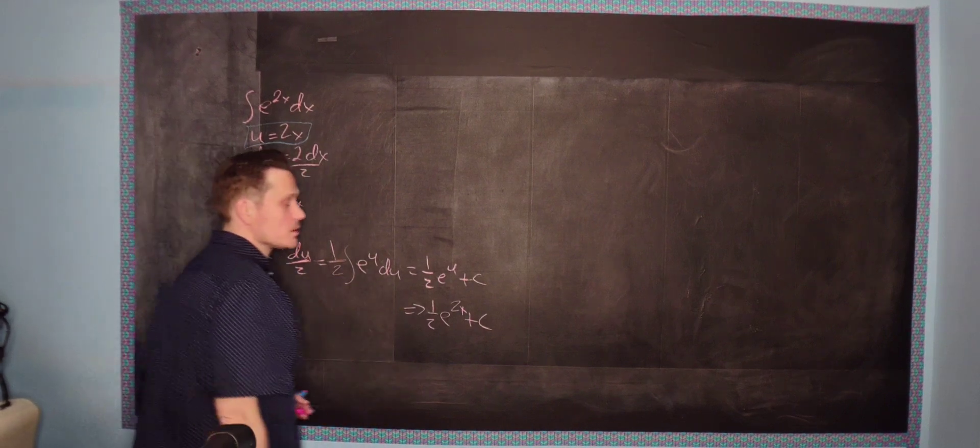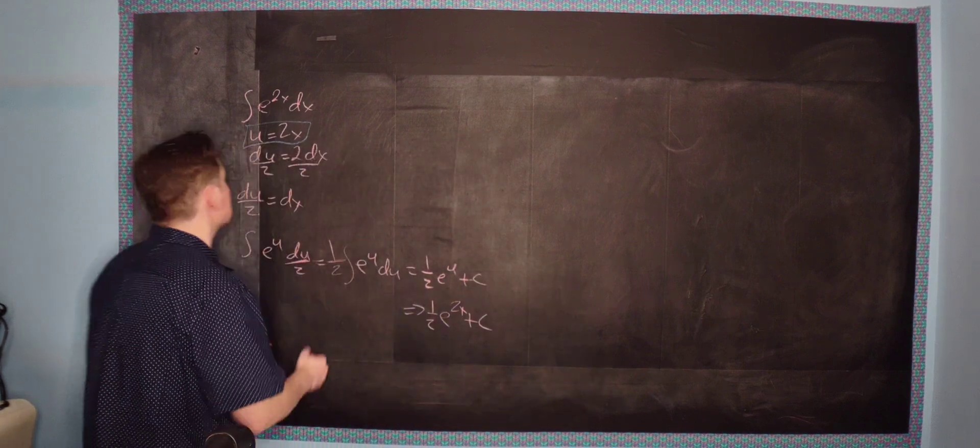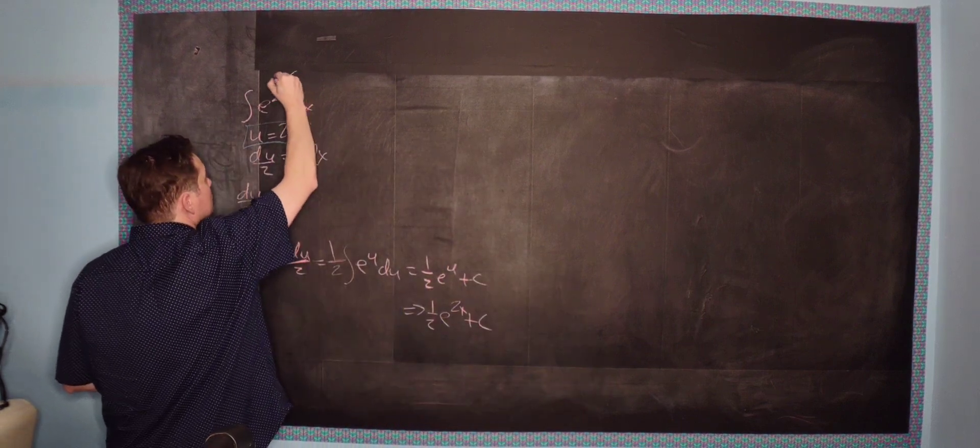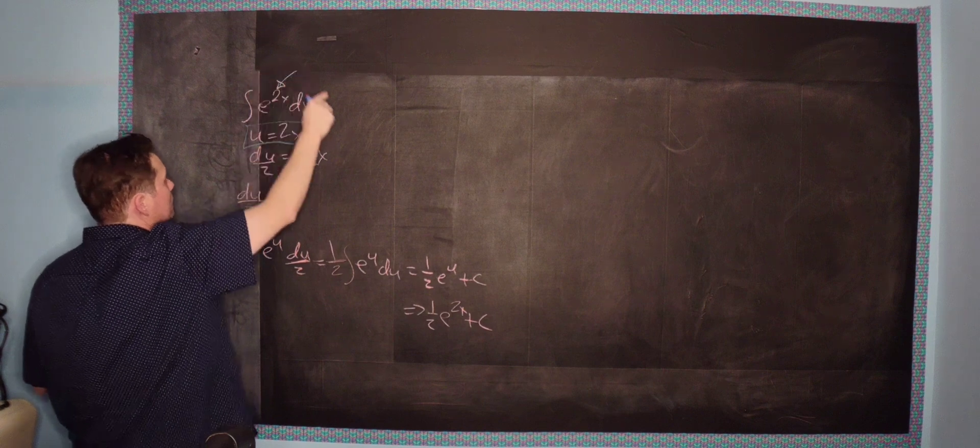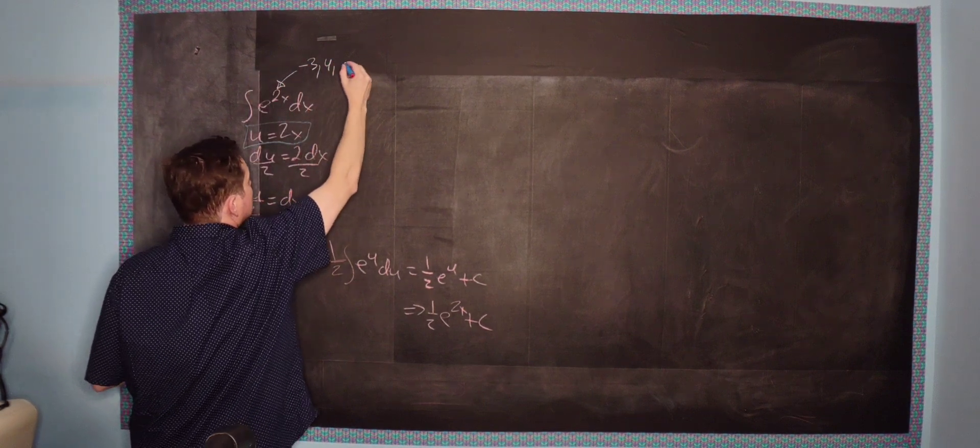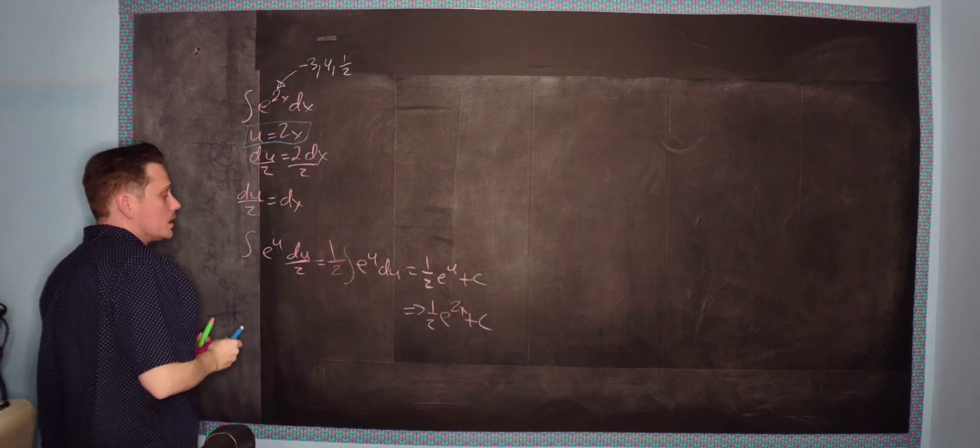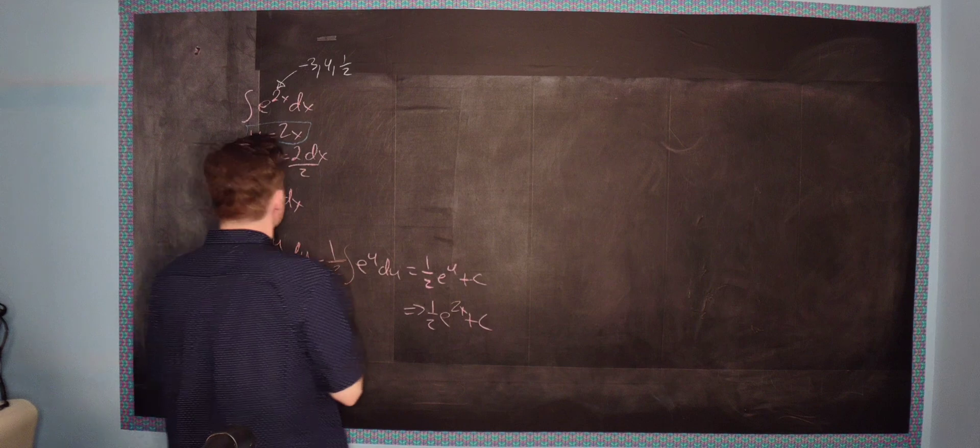The question is, can this be applied in general? In other words, imagine often what you have is this number up here. In this case, it happens to be a 2 here. But it could be, for example, like negative 3 or 4 or 1 half, whatever. It's just some number up there where the 2 is.